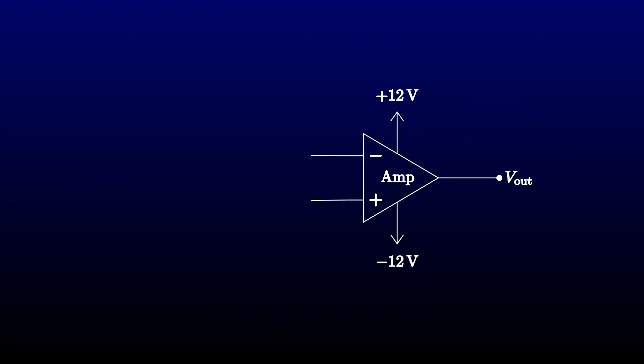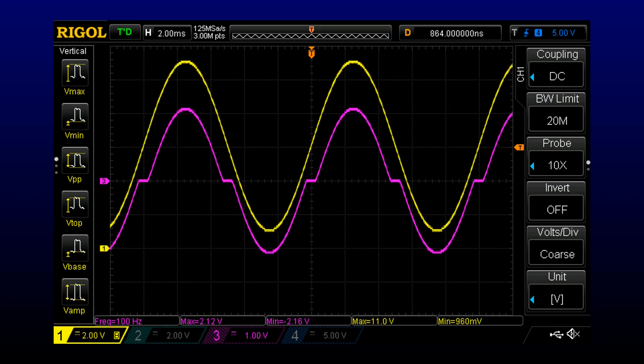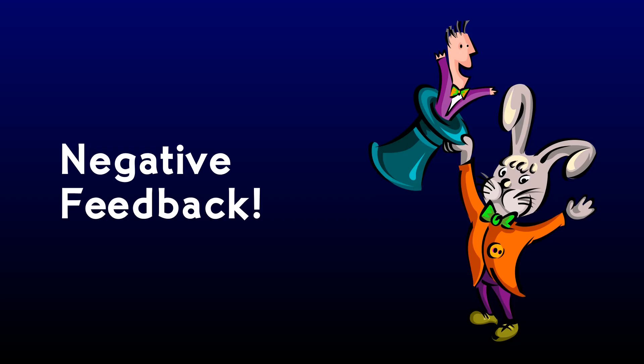Our first test setup connected a function generator to the plus input through a thousand-to-one voltage divider. We simply grounded the minus input. When we tried running this circuit, we discovered that we had two problems. Small imbalances among the components were magnified by the high gain, so we had to add an offset of several times the input voltage to bring the output into range. And the push-pull output stage gave our signal horrible crossover distortion. I promised at the end of the episode that this time we'd fix both problems with the magic of negative feedback.